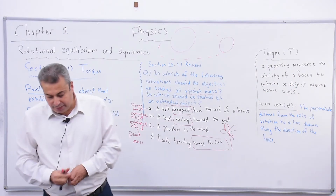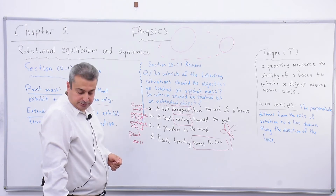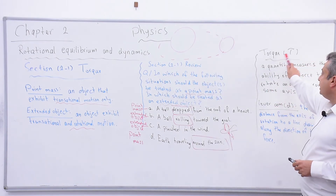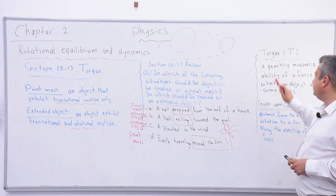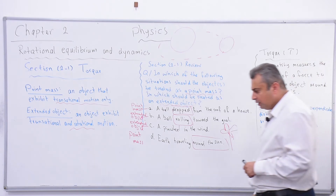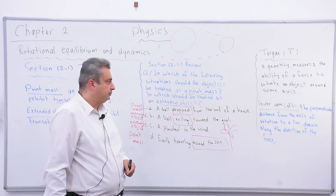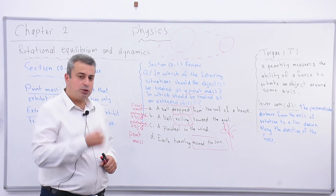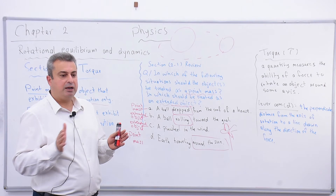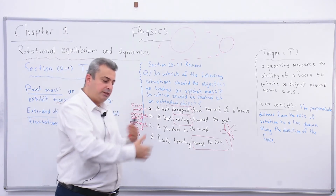Now, after we understand how to distinguish between point mass and extended objects, we will start talking about torque. Torque, whose symbol is tau (τ), is a quantity that measures the ability of a force to rotate an object around some axis. If you know the definition, you can write the formula: we have a force applied on an object at a distance, and as a result we get torque.